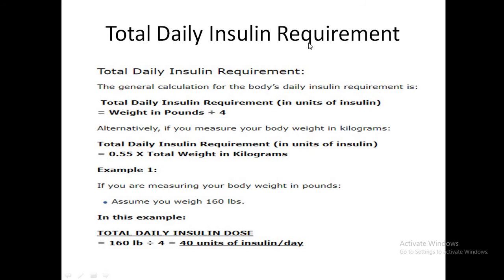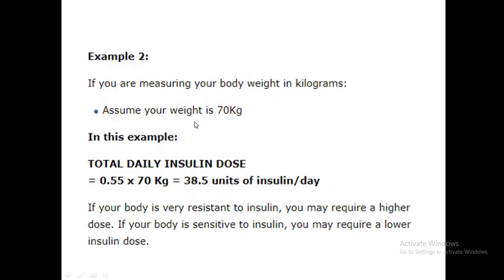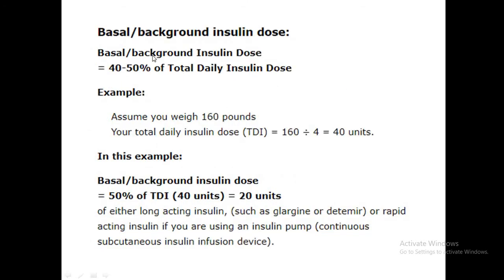To calculate the total daily insulin requirement, multiply weight in kilograms by 0.5. For an 80 kg man that gives roughly 40 units. In the UK we typically use weight in kilograms multiplied by 0.55. Once you calculate the total requirement, 40 to 50% is given as basal and the remaining 50 to 60% as bolus.